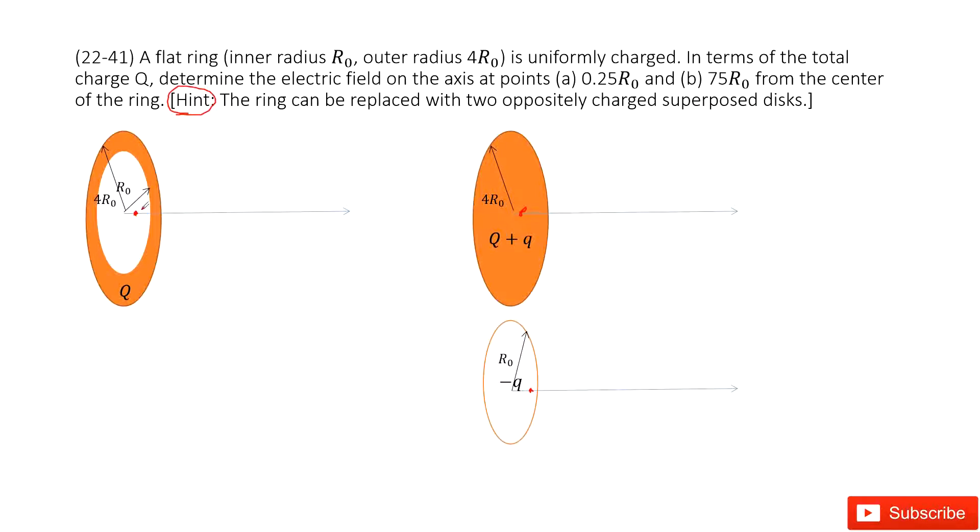We can consider this ring as two disks. One disk with radius 4 times r0 carries charge capital Q plus little q. Another disk has radius r0 and carries charge negative q. So this ring can be replaced by these two.